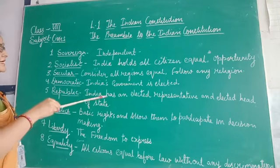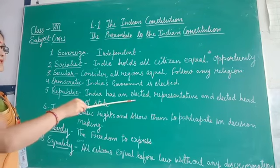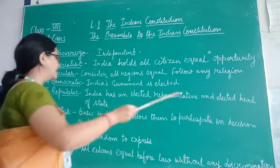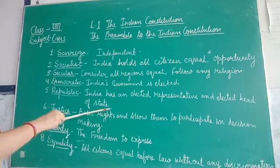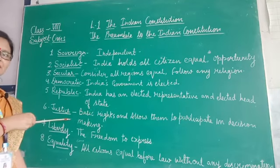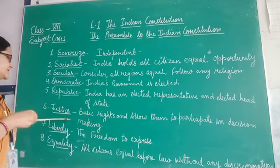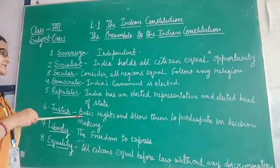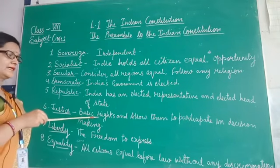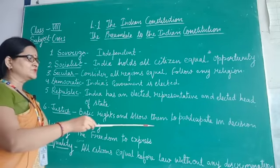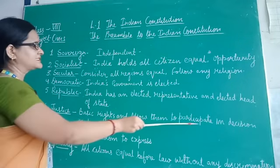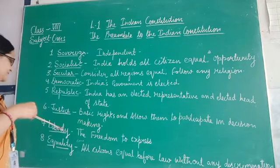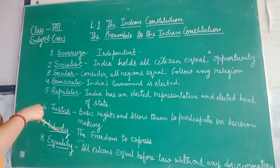Republic means that India has an elected representative and elected head of state. The next word described in the preamble is justice. It means that the citizens of India have been given some basic rights and are allowed to participate in the decision-making of the government.